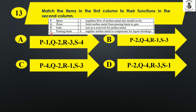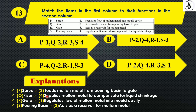For R, gate: the gate regulates the flow of molten metal into the mold, so R1. This confirms Option B. For S, pouring basin: it acts as a reservoir for molten metal, so S3. The matching is P2, Q4, R1, S3. The right answer is Option B.